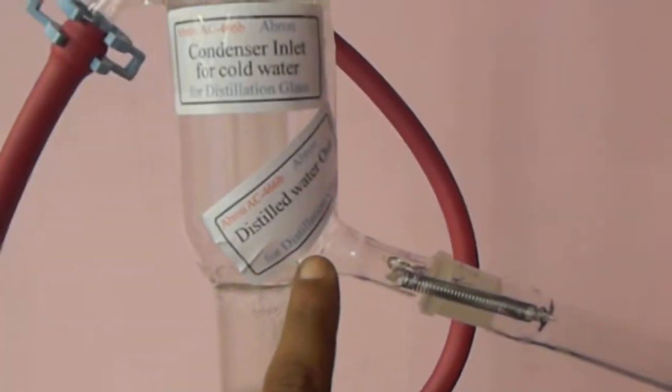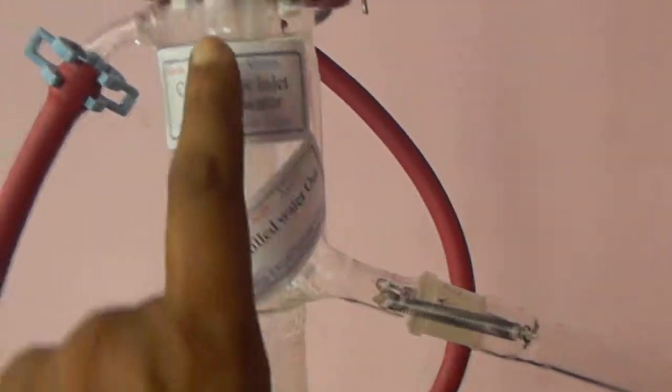First, this is a double distillation. This water is distilled inside. And then distilled water comes from this section to the second unit.